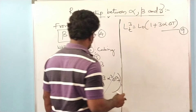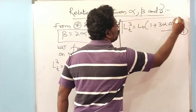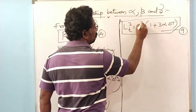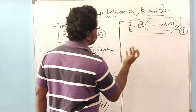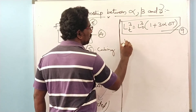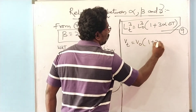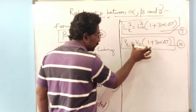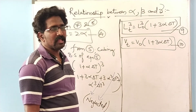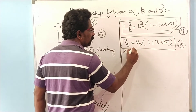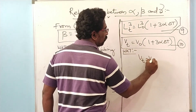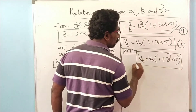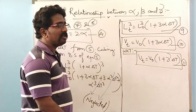We know that L-T cubed is nothing but V-T, and L-naught cubed is V-naught. So we can write V-T equals V-naught (1 + 3 alpha delta T), which is equation number 10. This equation is similar to the cubical expansion equation. We know that the equation for cubical expansion is given as V-T equals V-naught times (1 + gamma delta T), which is equation number 11.